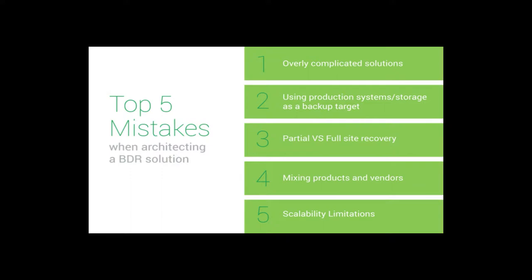The top five things we want to avoid today — we're talking specifically about how to architect a solution designed to keep your systems online regardless of the outage. First: overly complicated solutions. Second: using production systems as your storage or backup target. Third: partial versus full site recovery. Fourth: mixing products and vendors. And finally: scalability limitations. Throughout this presentation, I also want to share some buying tips you can leverage when purchasing your next technology solution.